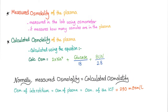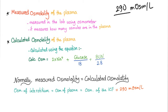All of the osmolality we have talked about until now is the measured osmolality. You draw some blood and send it to the lab. In the lab, they have a machine called an osmometer — it measures how many osmols are in the plasma and gives you a number, normally 290 milliosmols per liter. Calculated osmolality, on the other hand, requires you not to use a machine but to use your brain, and to calculate it using an equation.